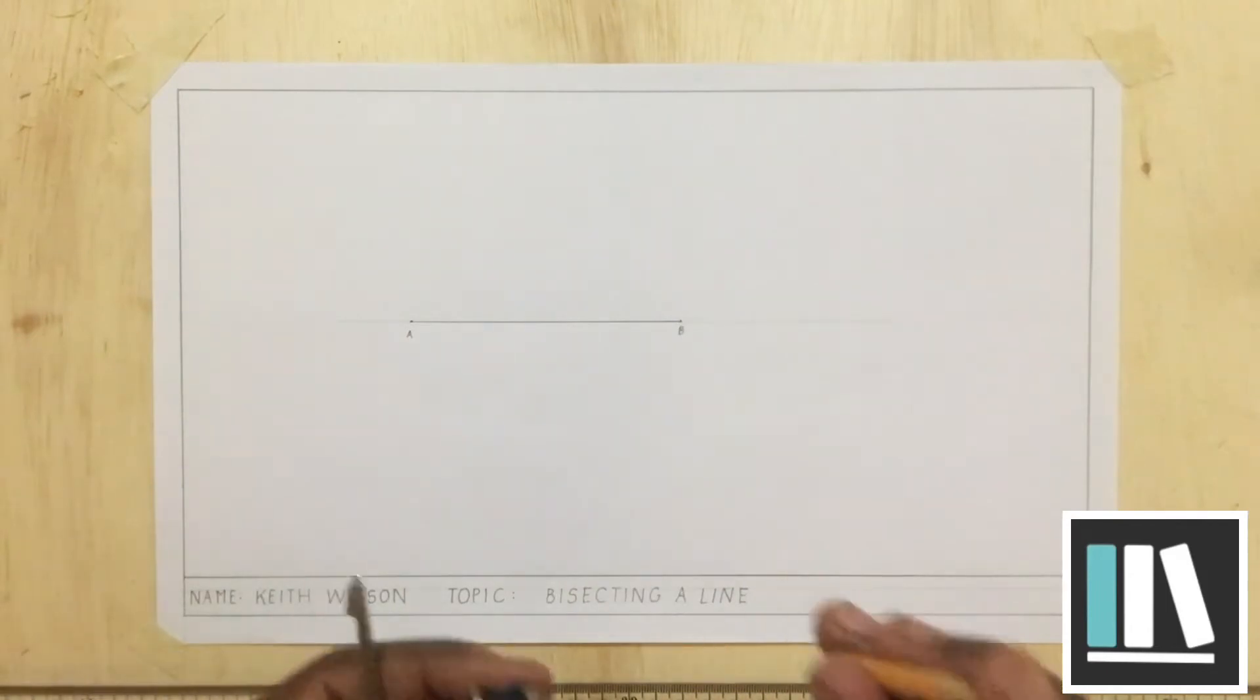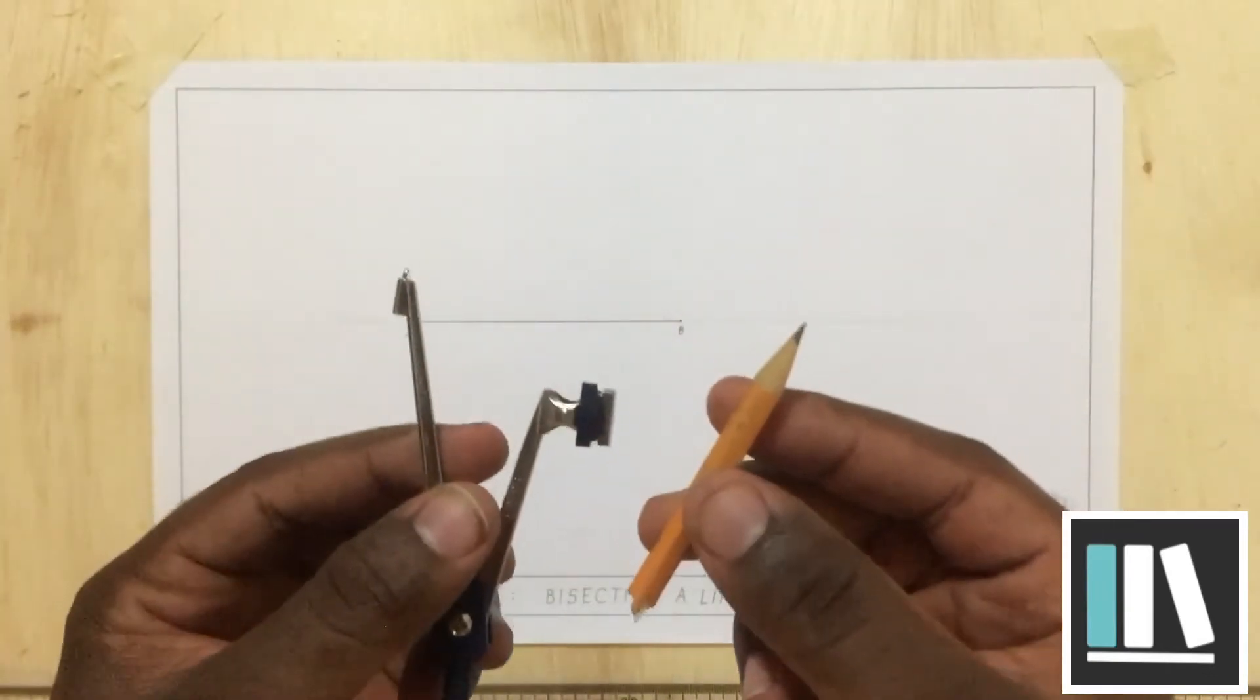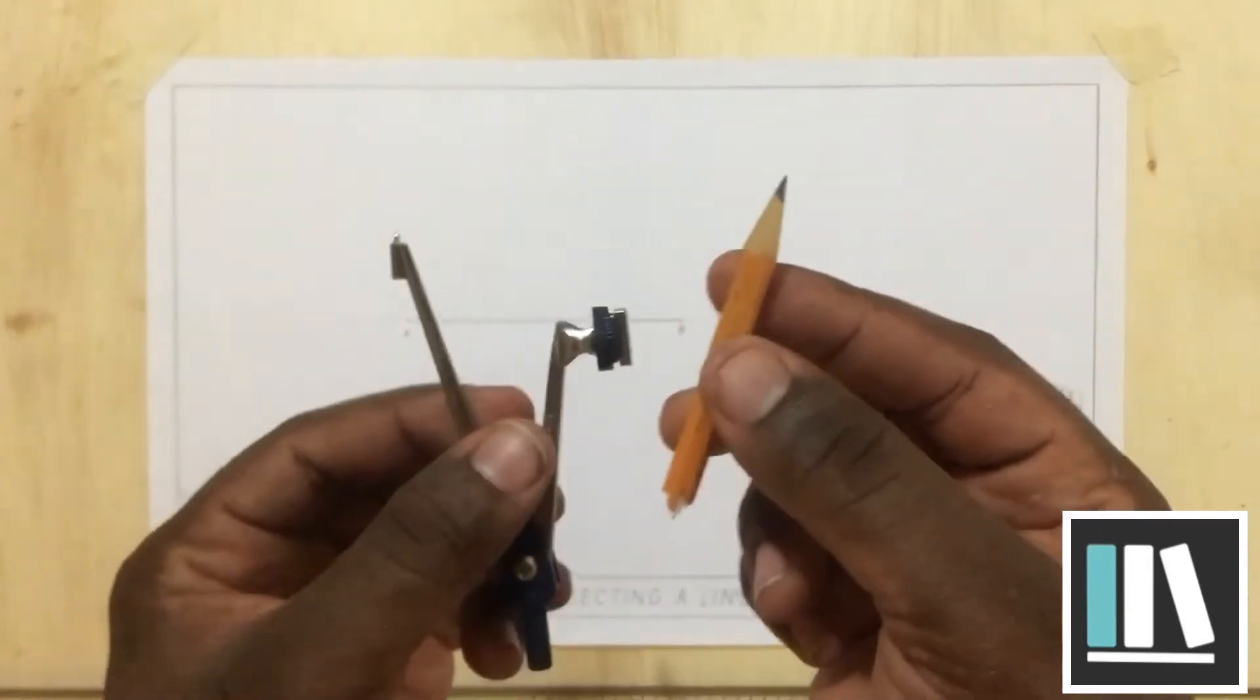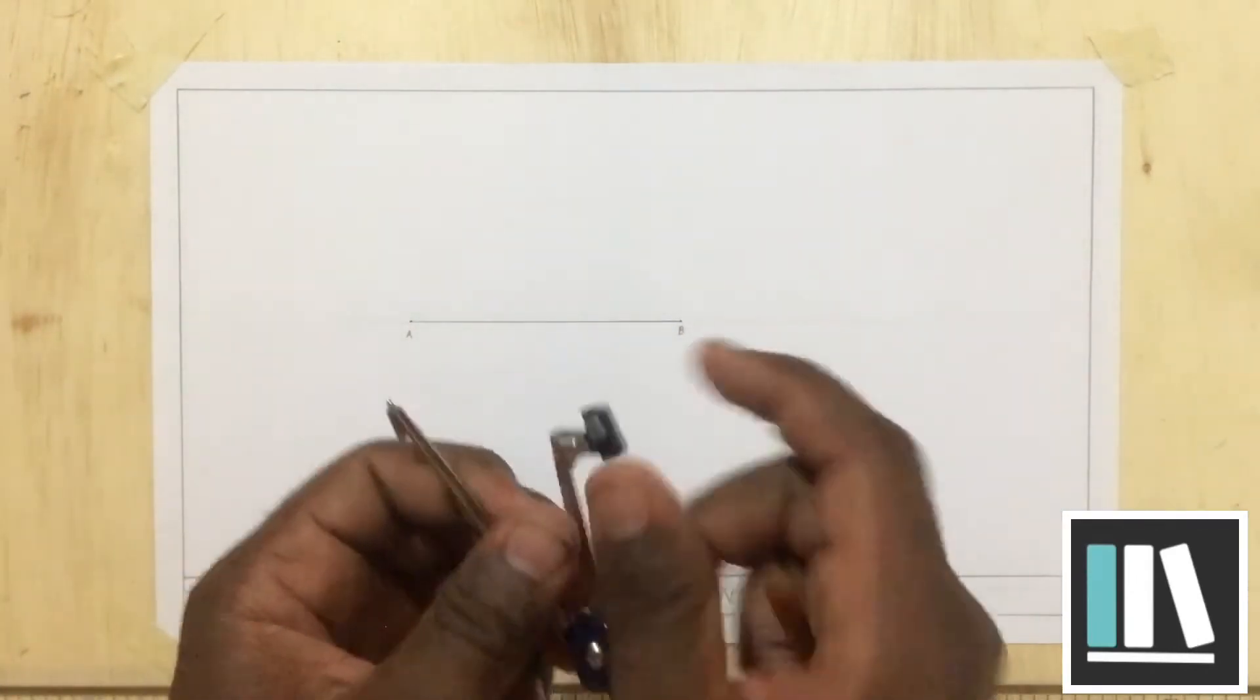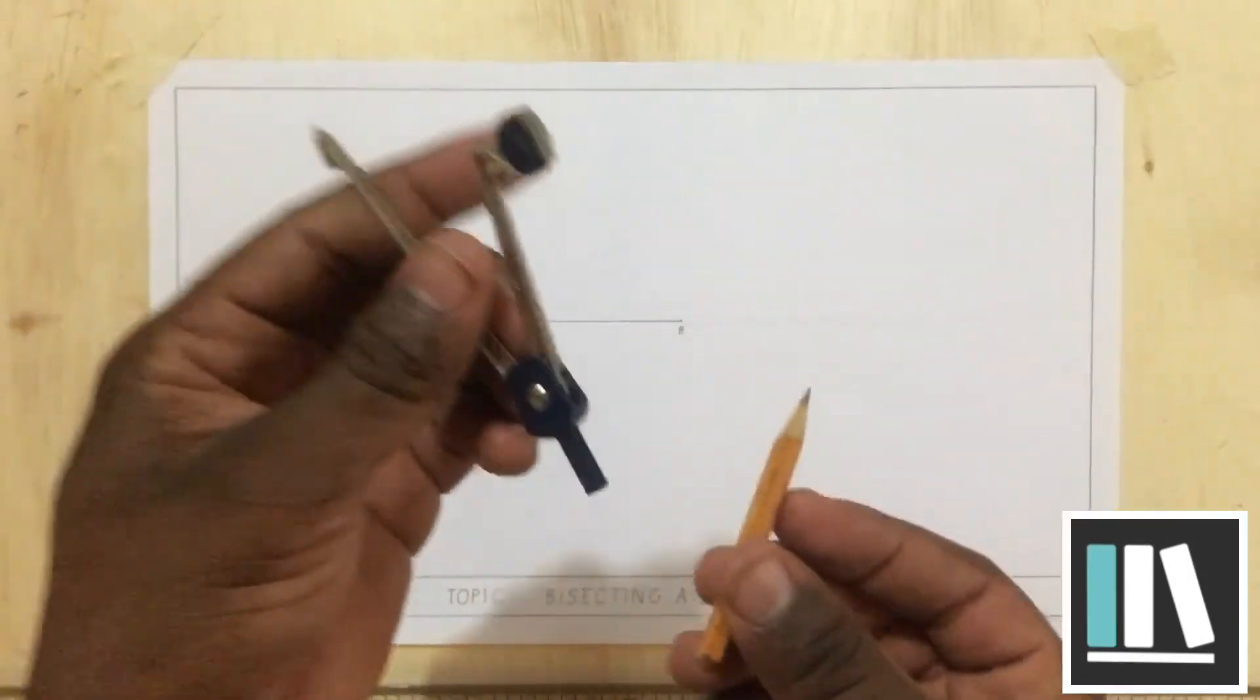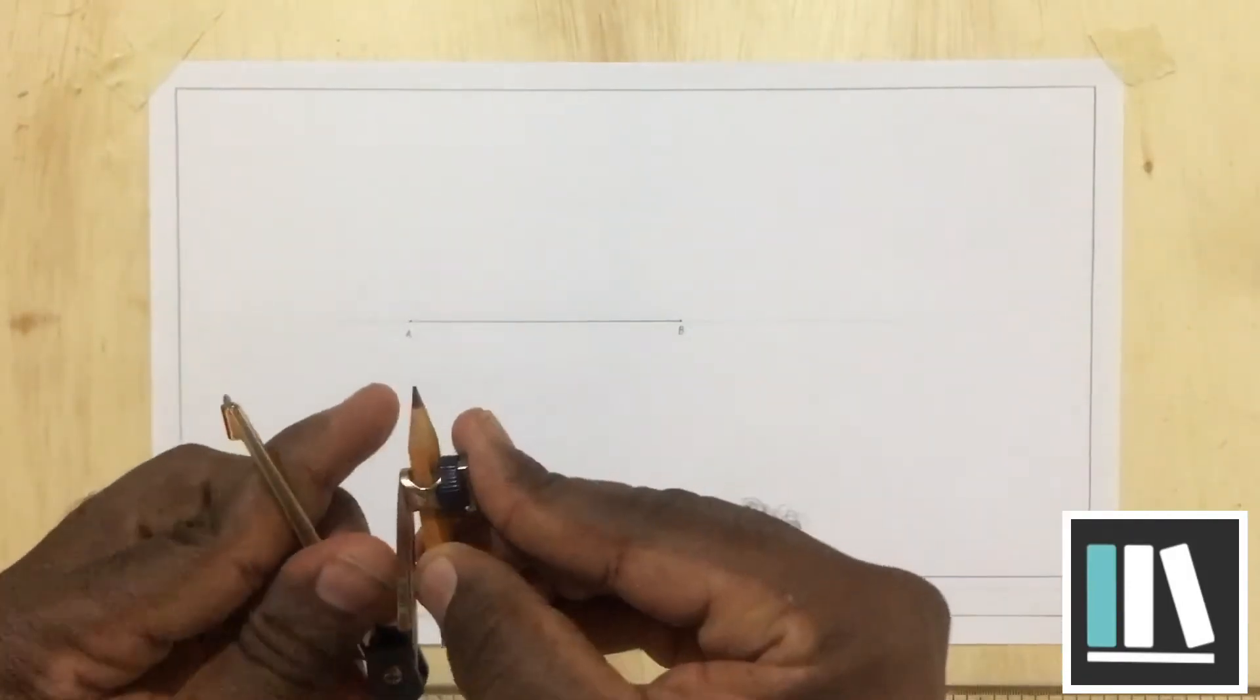In using this compass, there are a few things that you have to note. Firstly, you have to ensure that the pencil that you are using with this compass is short, as a longer pencil can impede your workflow. Here is the compass. I am going to now put the pencil in the compass.